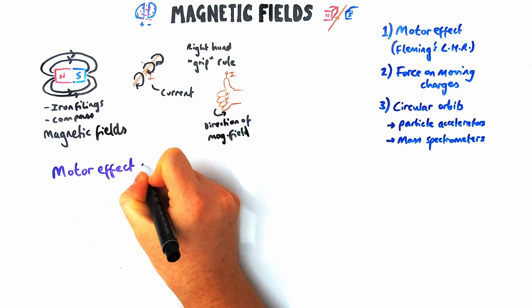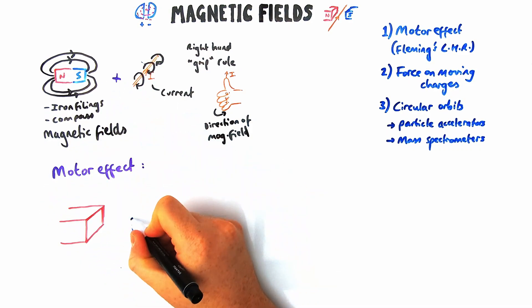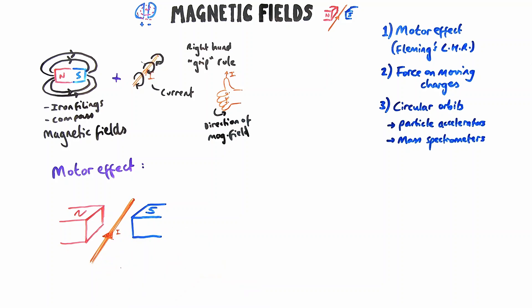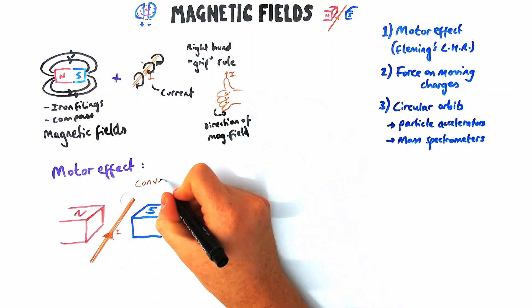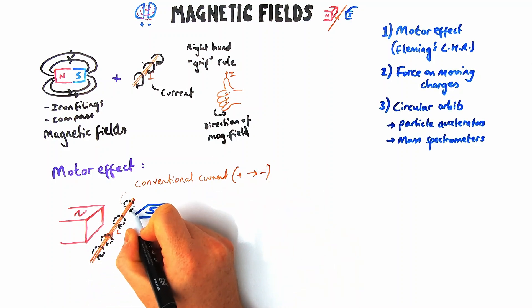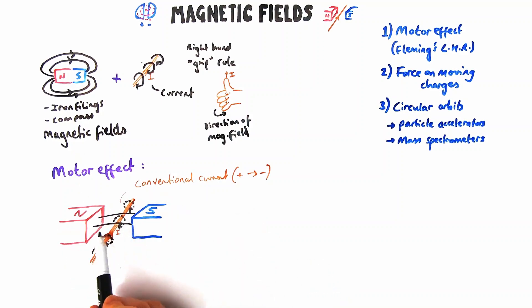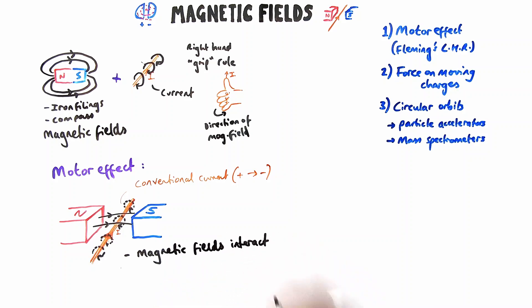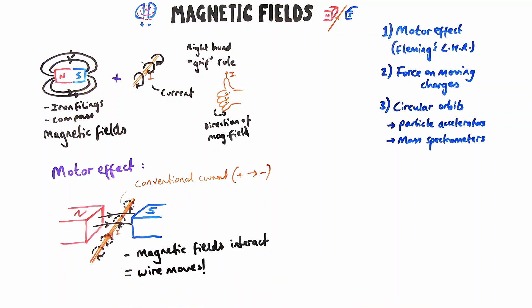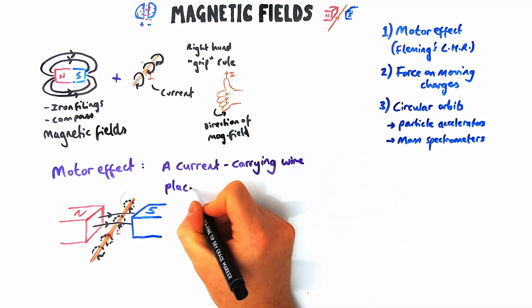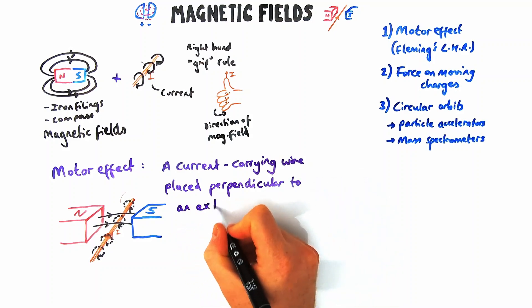Using both these types of magnetic field we can explain the motor effect. If I've got a permanent magnet with a north and south pole, and between it a wire with a current flowing through it — using conventional current from positive to negative — we've got the circular magnetic field around the wire and the field going from north to south. These two magnetic fields interact with each other, causing a force on the wire and making it move. A current-carrying wire placed perpendicular to an external magnetic field will experience a force.